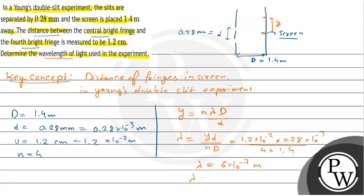So we can say λ is nearly equal to 600 nanometers, and this is our final answer. The wavelength of light used is 600 nanometers. Hope you understand it. Best of luck.